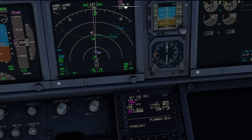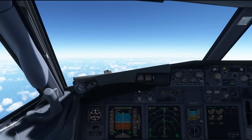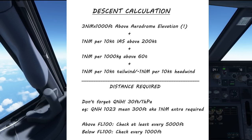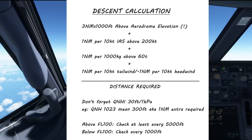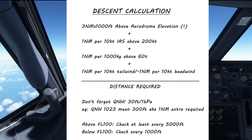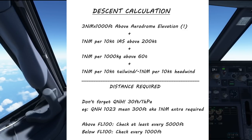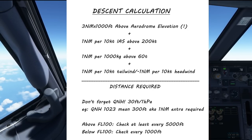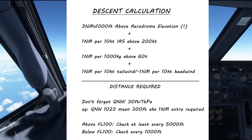Disregard the top of descent information on the navigation display now. What we are going to do now is some very basic mathematics. Basic descent calculation is quite easy — you take three times your altitude above the aerodrome elevation. So we're currently cruising at 35,000 feet, which means we need to take 105 nautical miles — that is 35 times 3.